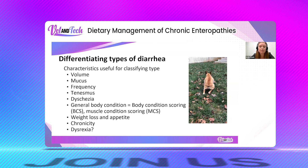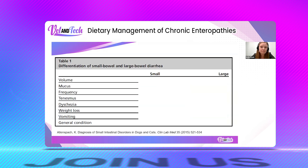And then again, chronicity, weight loss, appetite, and that term dysrexia — which is one of my favorite terms right now. This chart is really helpful. It's from a review that Karen Allen Spa did that was published in 2015.